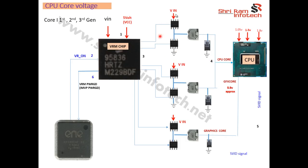There are two pulse width modulators for the CPU core, and both their voltages join together and reach the processor. The VRM chip here is the ISL 95863. This chip requires two input powers to work: VIN voltage at 18 volts and VCC or VDD voltage at 5 volts. There are a total of three pulse width modulators — two for the CPU core and one for the graphics core.